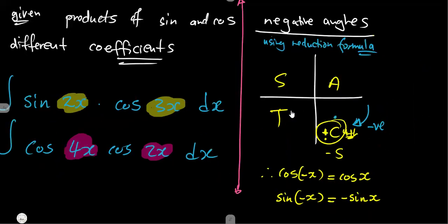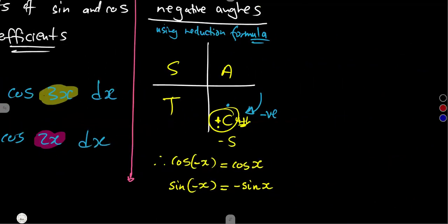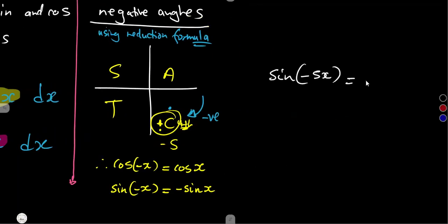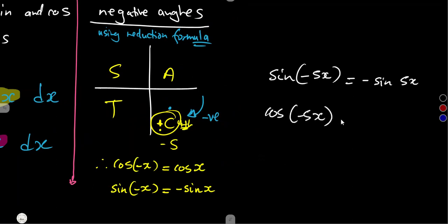For example, if you are simplifying and you end up with sine(−5x), you want to avoid integrating a negative argument like that. You can take the negative out: sine(−5x) is the same as negative sine(5x). For cosine, it remains positive: cosine(−5x) is the same as cosine(5x). These follow from our negative angle rules.